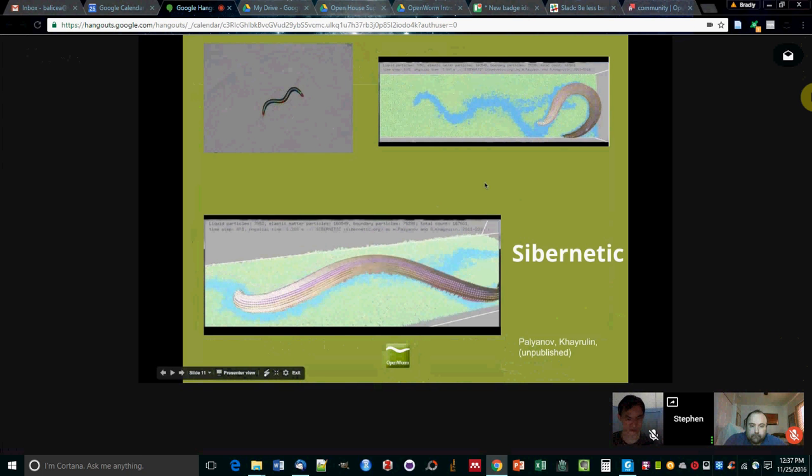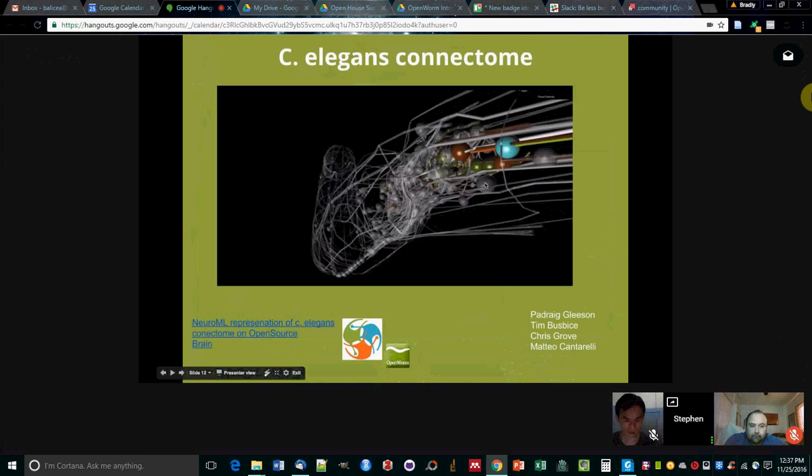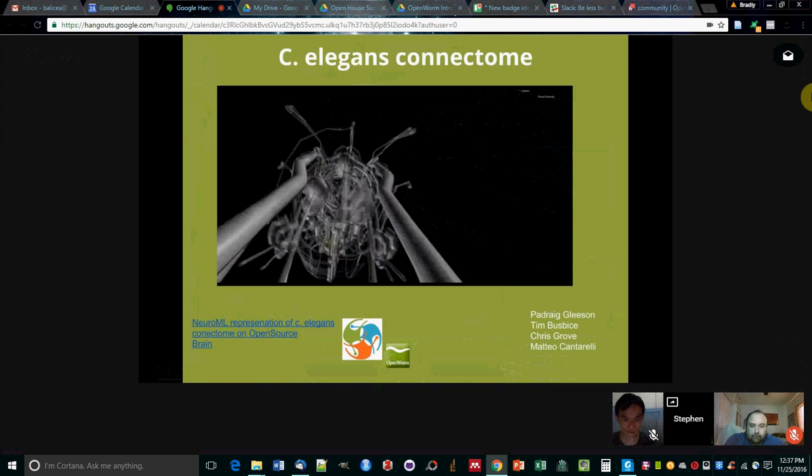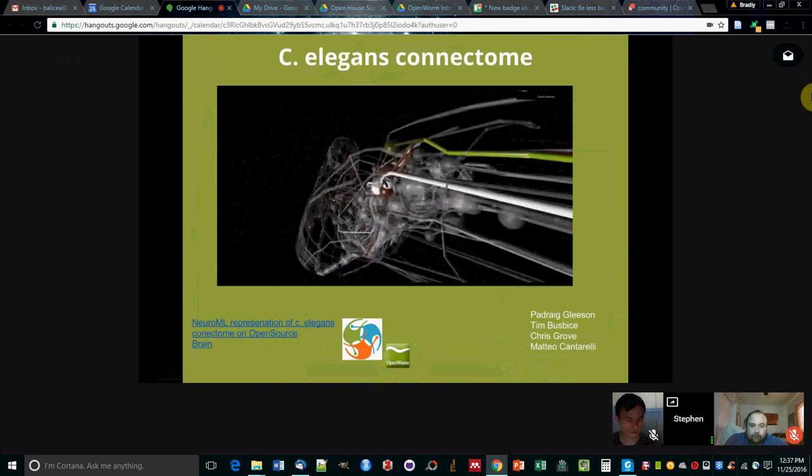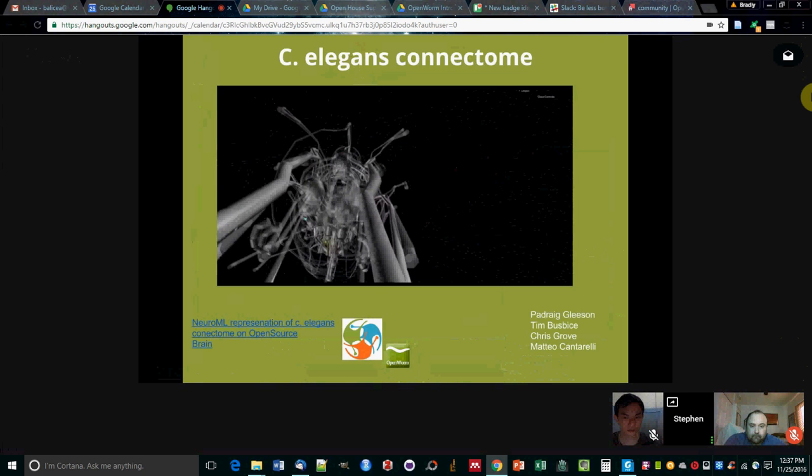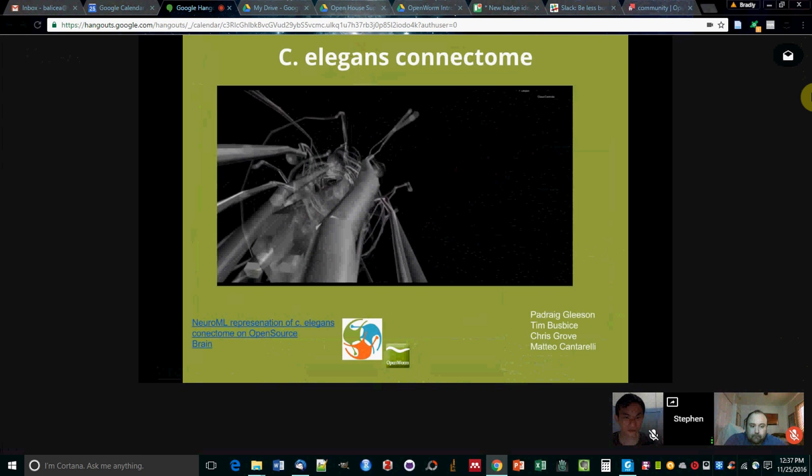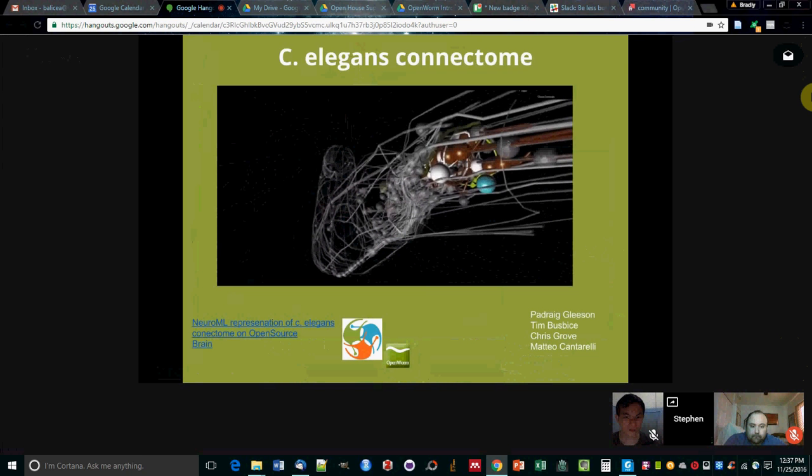That's the subject of another part of the project where we've been building out the connections and the dynamics of the neurons. You can also browse this up online on something called Open Source Brain. You'll hear from Padraig telling you about that a little bit later. And so this makes for a really nice open source representation of a complete neuron circuit, which we think is one of the most detailed that's ever been put up online.